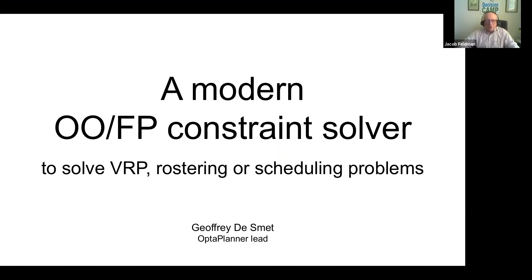Our next presenter is Jeffrey Desmet from Red Hat. Jeffrey is the author of a very popular optimization solver known as OptaPlanner. He is certainly an expert in this area, supporting this product for many years. Being in constraint programming myself, I am a specification lead for one of the standards. I would say that Jeffrey is in a way a maverick in this movement — his solver is built on local search, contrary to many other popular constraint solvers.